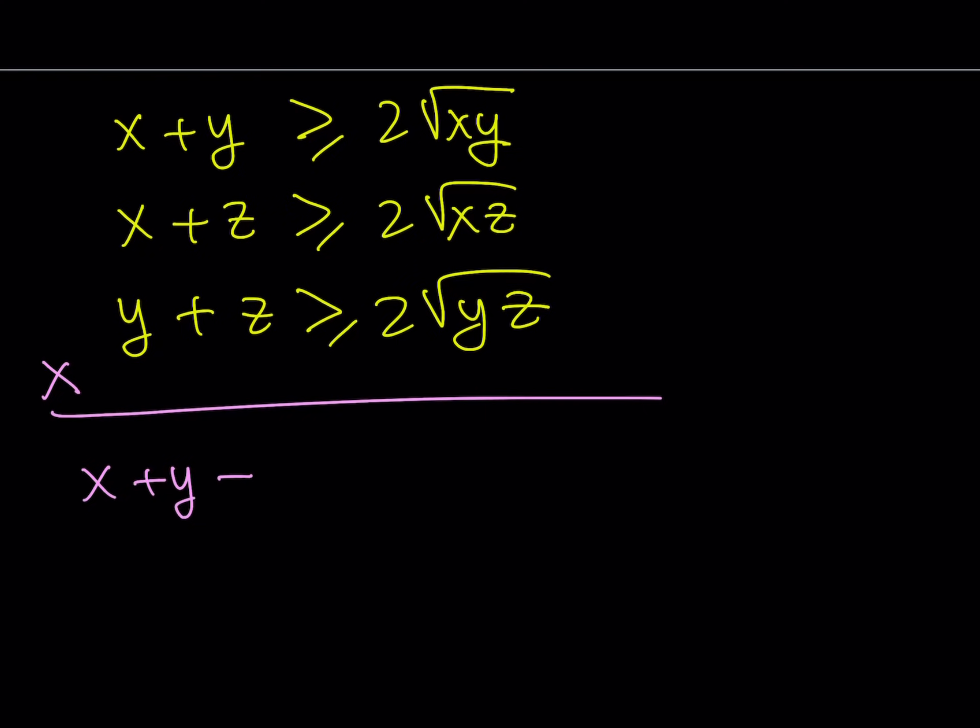And when we do, we get x plus y multiplied by x plus z multiplied by y plus z. And if I go ahead and multiply the right-hand side, 2 times 2 times 2 is going to give me 8. And let's go ahead and multiply these expressions together.